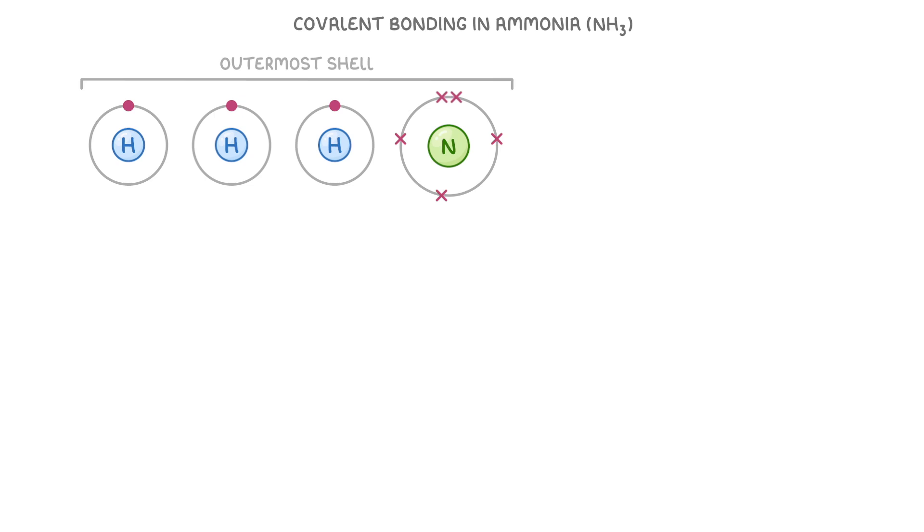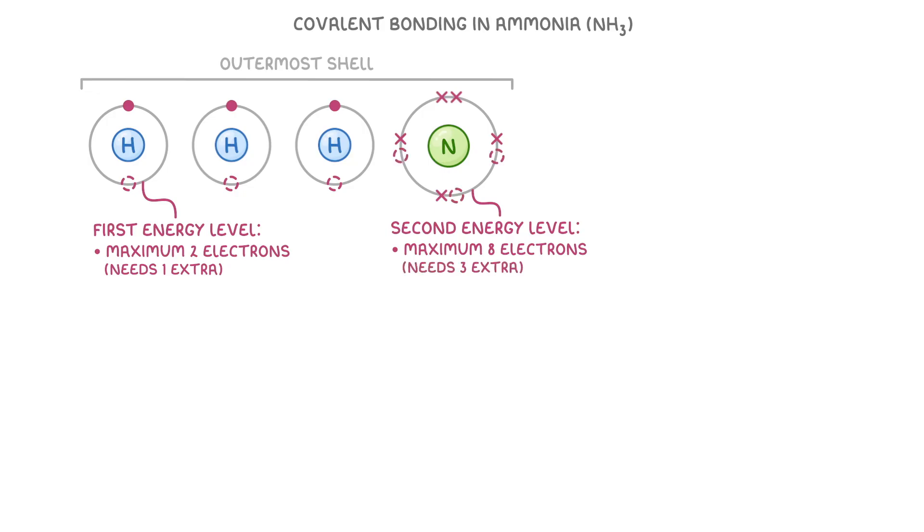So that all of them have full outer shells. Remember that because this is hydrogen's first energy level it can only hold a maximum of two electrons, so each hydrogen is going to need one extra electron to fill their shell. Whereas because this is nitrogen's second energy level it can hold a maximum of eight electrons, so it's looking for an extra three electrons to become full. So if each hydrogen shared one electron with the nitrogen then all of the atoms would have full outer shells and that would be our dot and cross diagram all done.